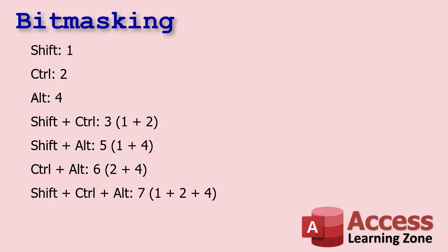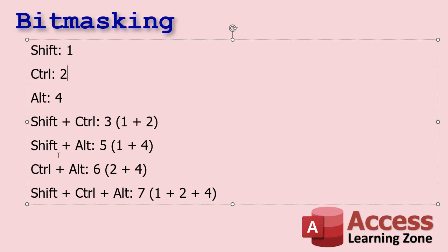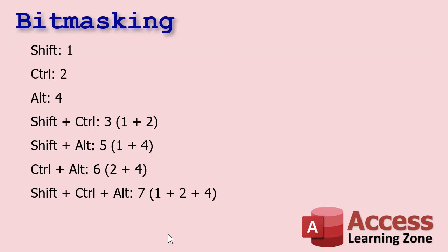Why not just use 3 for Alt instead of 4? Because you can use these to get any combination: Shift plus Control is 3 (1+2), Shift plus Alt is 5, Control plus Alt is 6, and all three together is 7. No other combination gives you those unique values. That's called bit masking — it has to do with manipulating bits in a byte, squeezing a lot of information into a tiny space. Programmers in the 60s, 70s, and 80s were very creative at this — when a kilobyte of memory cost a thousand dollars, you had to be.